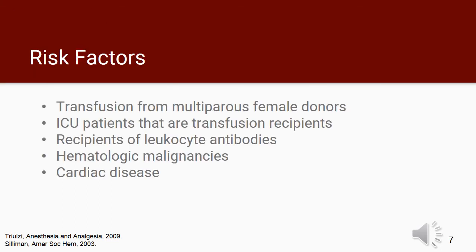Now for some risk factors associated with TRALI. Female blood donors with previous pregnancies usually have HLA antibodies with a prevalence of 24%, and the prevalence is increasing in relation to the number of previous pregnancies. Since HLA antibodies have been suspected in TRALI, blood centers have established standards to produce plasma components mainly from male donors. Other risk factors include ICU patients that have received a transfusion of platelets and plasma, those who have received leukocyte antibodies, those with hematologic malignancies, and also those with cardiac diseases.